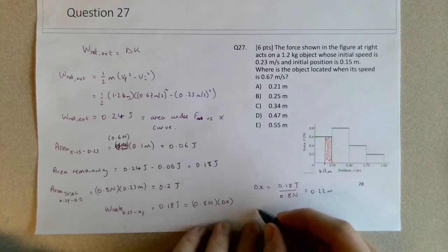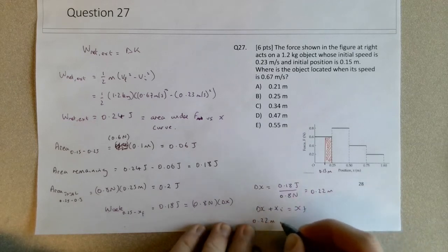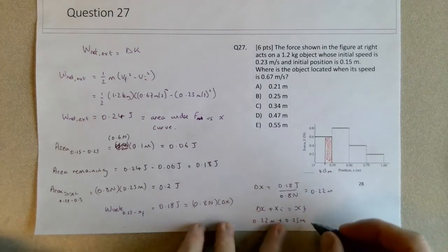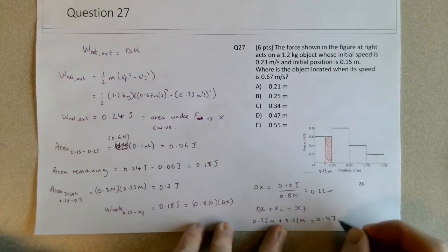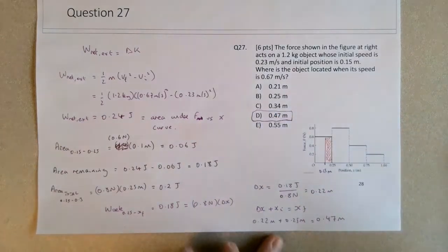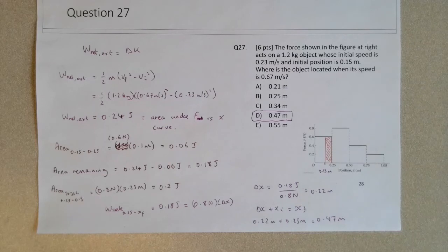So it will end up at 0.47 meters. Delta x plus xi equals xf. So 0.225 meters plus 0.25 meters gives 0.47 meters, which is choice D.